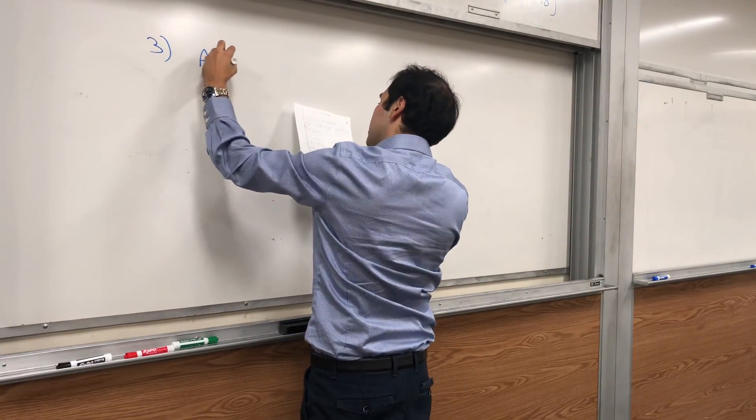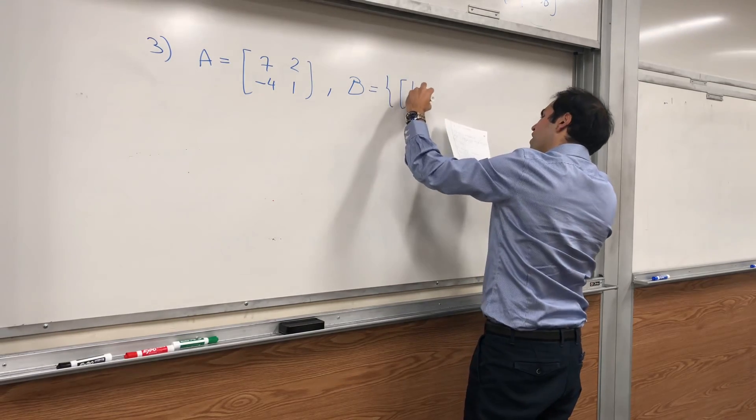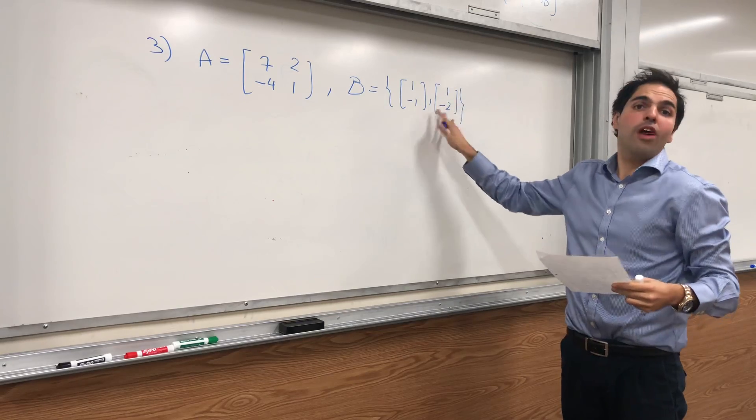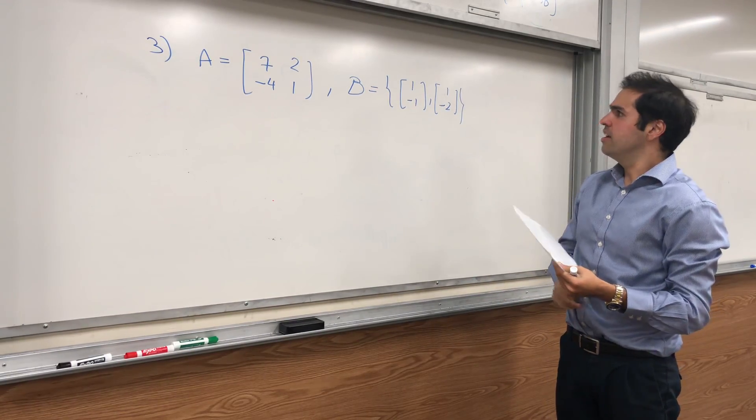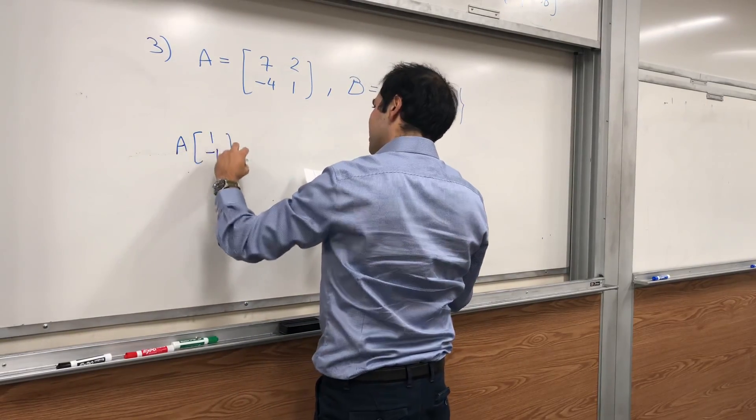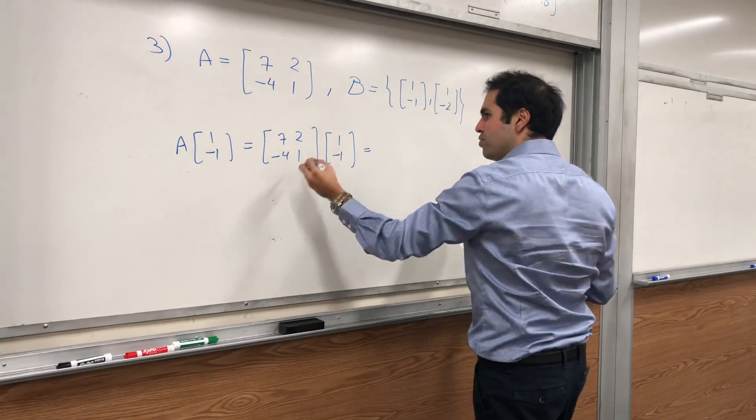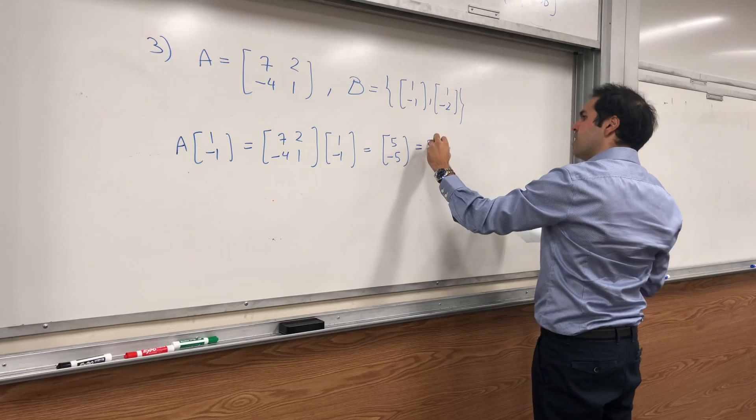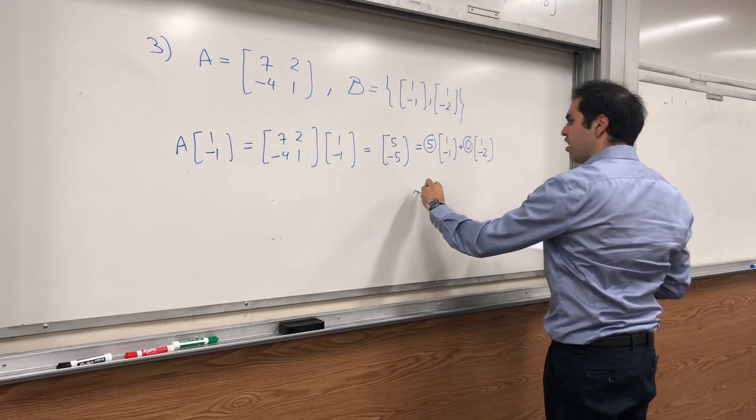Suppose A is [7, -4; 2, 1] and B is {(1, -1), (1, -2)}. And I want to tell you from the outset, those ones will be our eigenvectors of A. So the question is, what happens to the matrix of A if B consists of eigenvectors? Well, let's do that. Let's calculate A(1, -1). Well that's [7, -4; 2, 1] times (1, -1). If you do that, it turns out it's (5, -5). And now, how can you write it in terms of those vectors? Well it is indeed 5 times (1, -1) plus 0 times (1, -2).